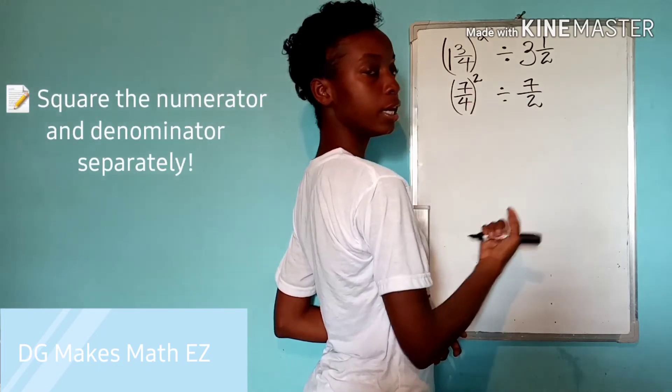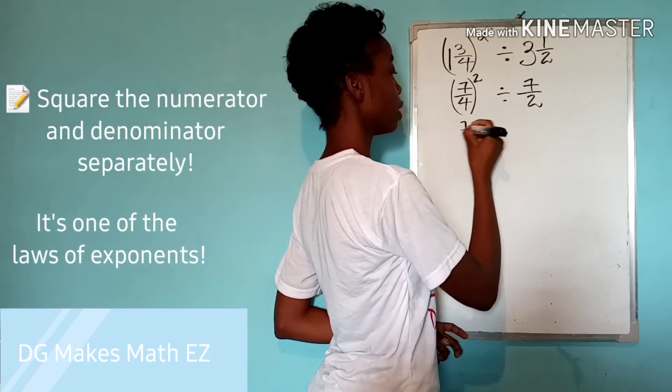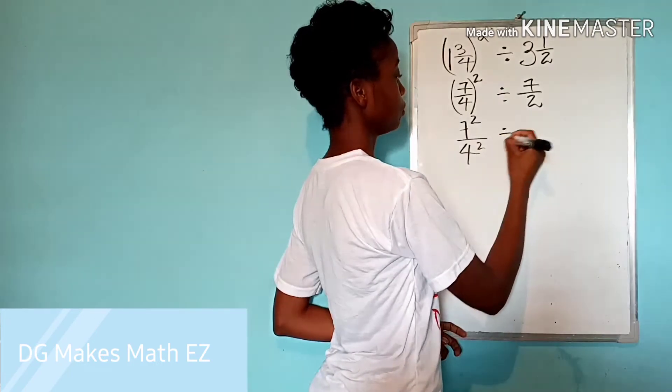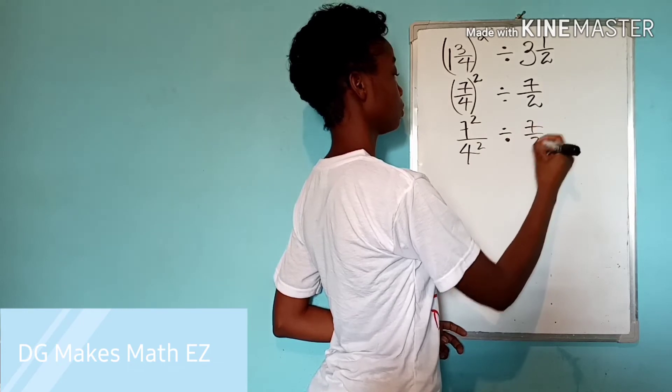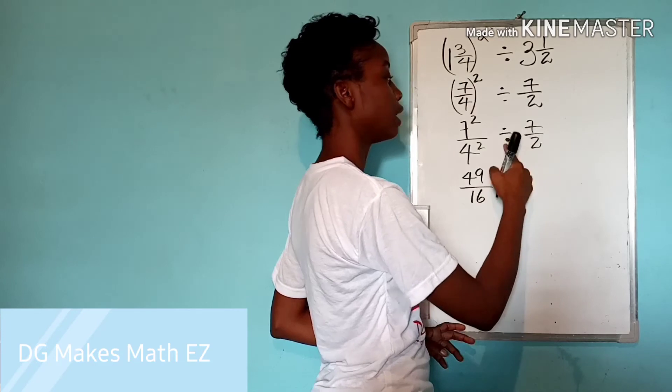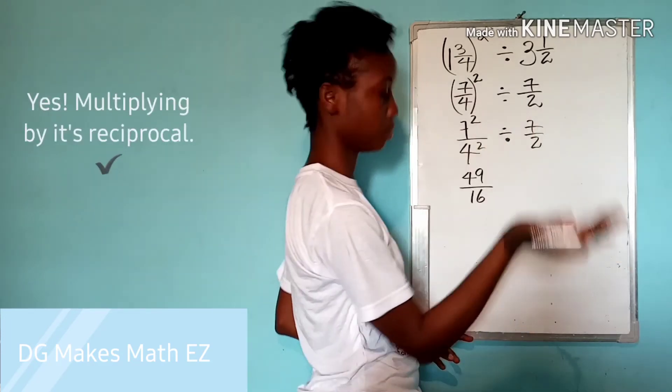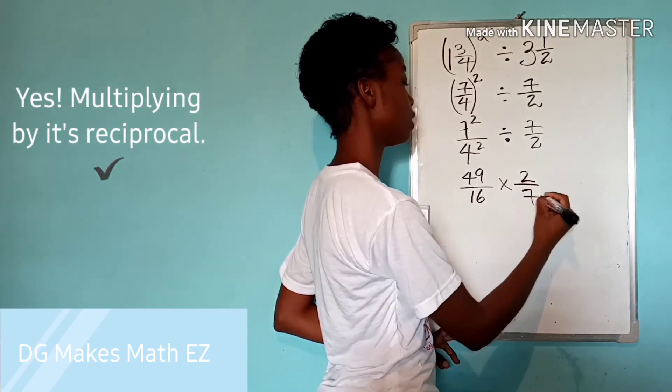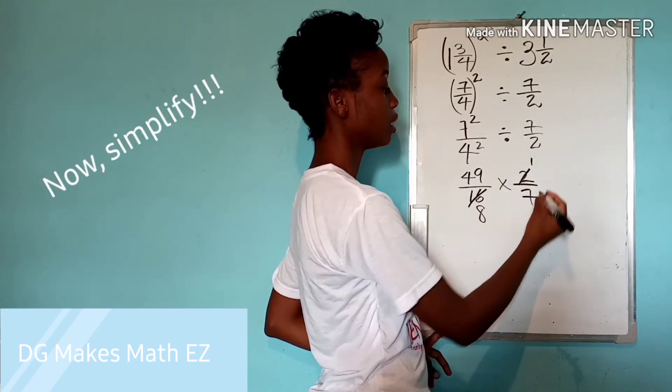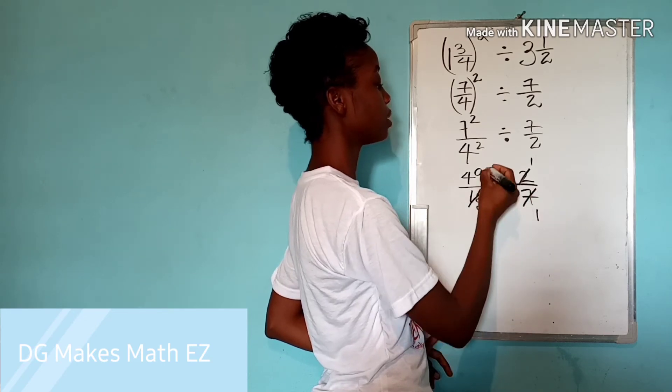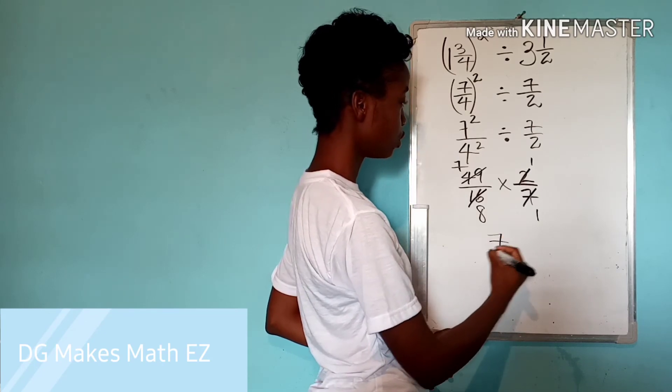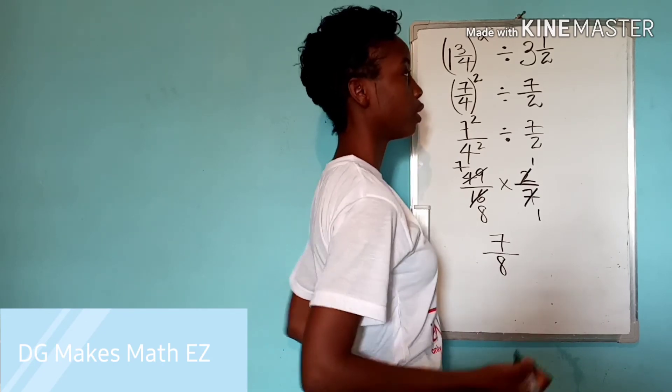We are going to square seven over four. And this is the same as seven squared over four squared. The seven squared is forty-nine. Four squared is sixteen. And dividing by a fraction is times two over seven. Now let's reduce. Two into two goes one time. Two into sixteen, eight times. Seven into itself, one time. Seven into forty-nine, seven times. And so we now have our answer to be seven over eight.